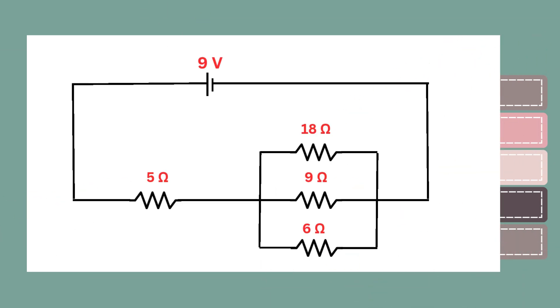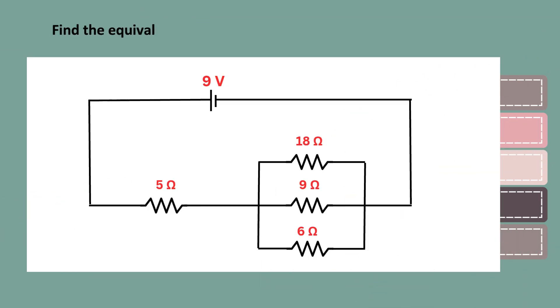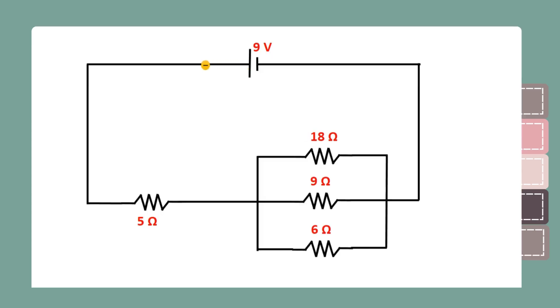Hello and welcome to C-Note. In this video, we'll learn how to find the equivalent resistance of this circuit. First, let's understand how current flows through this circuit. The entire current flows through the 5 ohm resistor.